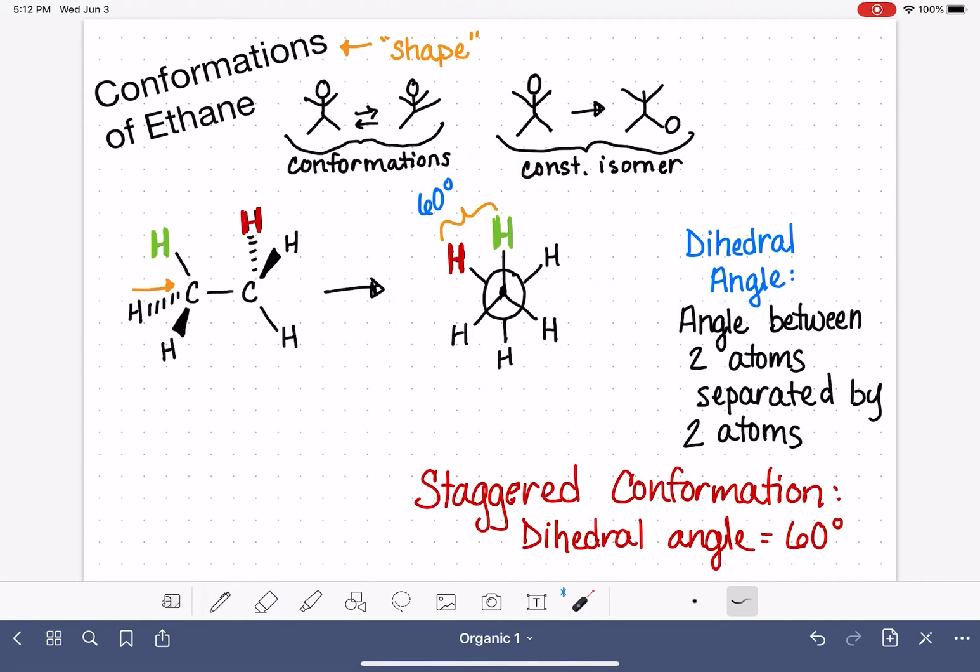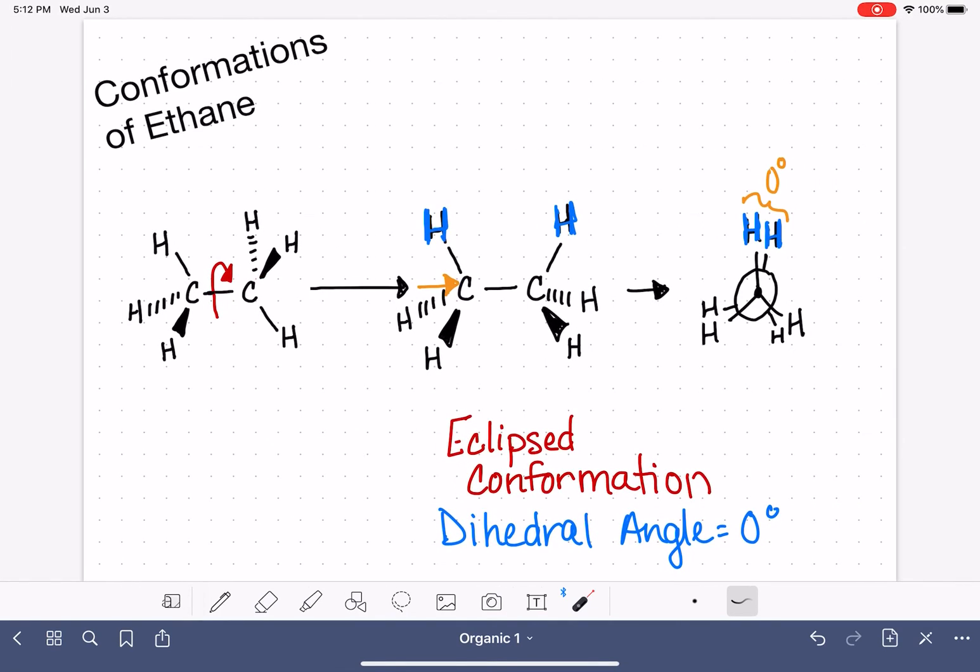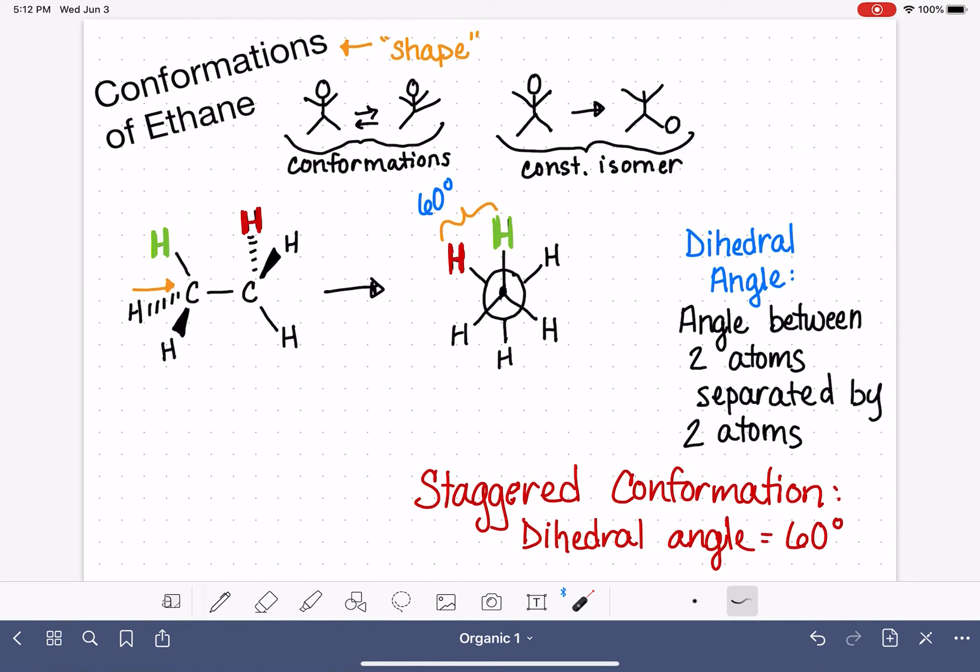Now, as you're holding that molecule in your hand, and it's easier to visualize this if you're literally holding a model, you will see that not only is the dihedral angle zero for this particular conformation, the distance between the hydrogen atoms, in fact, any two hydrogen atoms in the eclipsed conformation is smaller than the distance between hydrogen atoms in a staggered conformation.